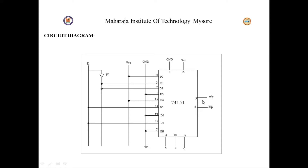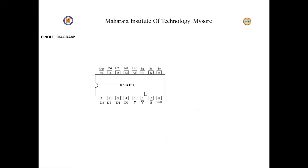To get the output from IC 74151, we need to take pins 5 and 6, where pin 6 is the inversion of the output. This will be the circuit diagram we need to follow while connecting the components to the IC and the NOT gate.